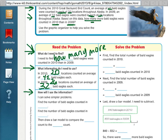How will I use this information? I can solve simpler problems. Find the number of bald eagles counted in 2010. Find the number of bald eagles counted in 2009. Then draw a bar model to compare the 2010 count to the 2009 count.